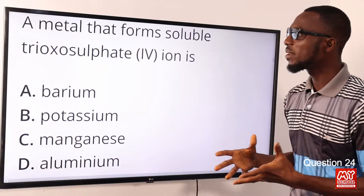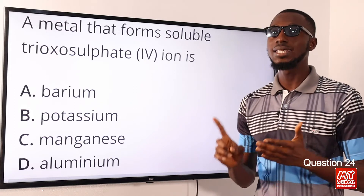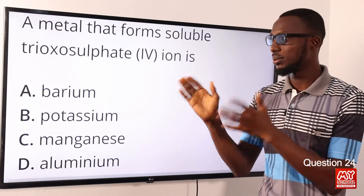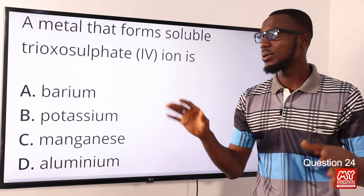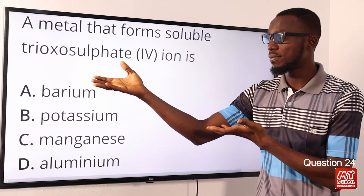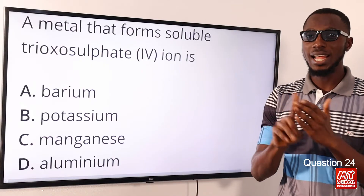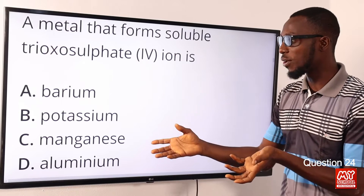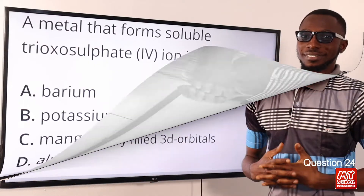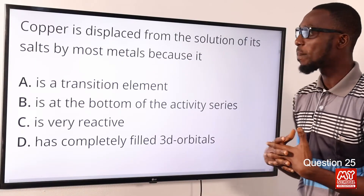Question 24: A metal that forms soluble trioxosulfate(vi) of its ion is what? When you talk about ammonium, potassium, sodium, and calcium, they form soluble trioxosulfate(vi). Talking about solubility, we are talking about water for this context. Every other metallic sulfate is insoluble. The metals that form soluble trioxosulfate(vi) are ammonium, potassium, sodium, and calcium. From the options provided, we find potassium, so the correct option is option B for potassium.